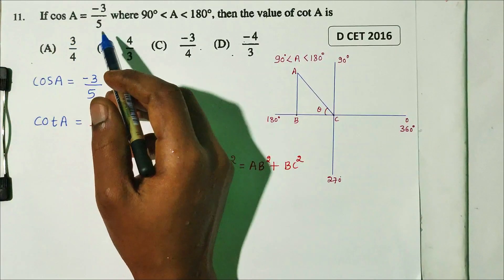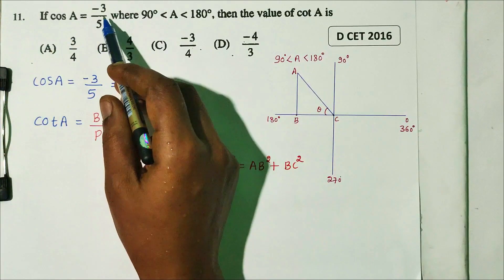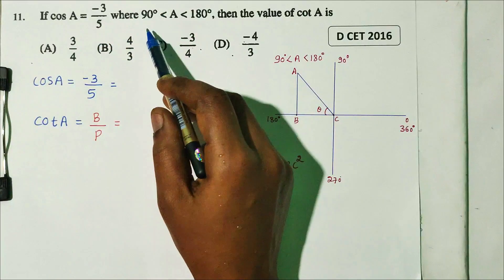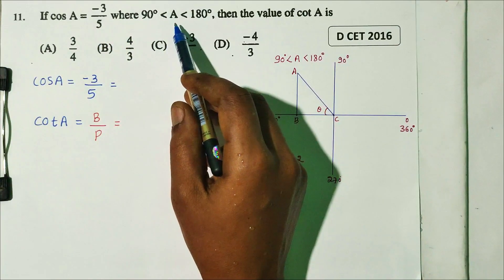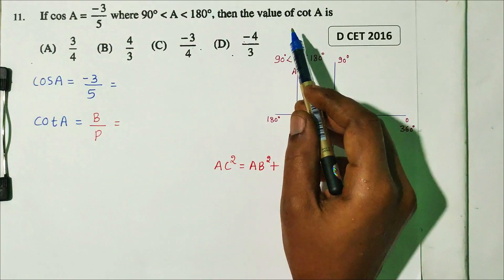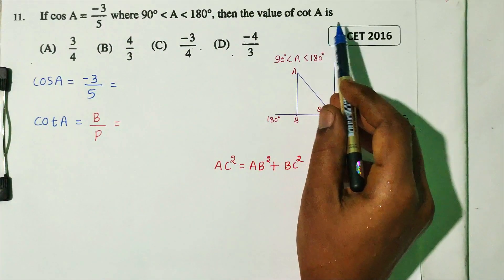Question number 11. If cos A is equal to minus 3 divided by 5, where 90 degrees is less than A less than 180 degrees, then the value of cot A is?